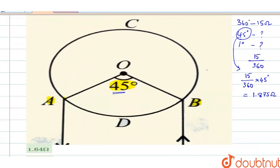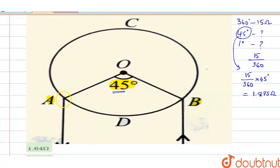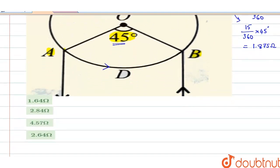With the angle 45 degrees in this diagram, the ADB part of the resistance wire has a resistance of 1.875 ohms. So totally it is 15 ohms, and ADB has 1.875 ohms.